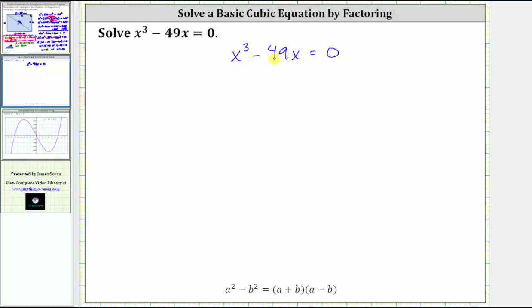To show this, we could write each term as a product with a factor of x. For example, x cubed is equal to x squared times x, minus 49x means 49 times x.